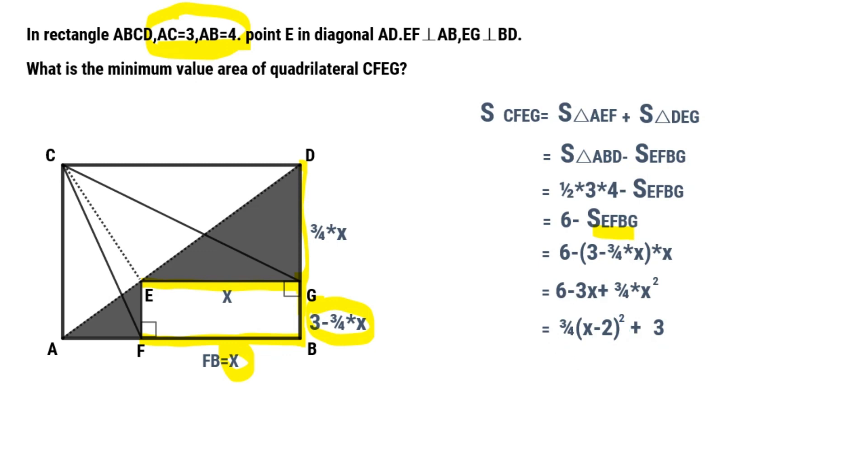So we get the result. The minimum value of area CFEG is 3 units.